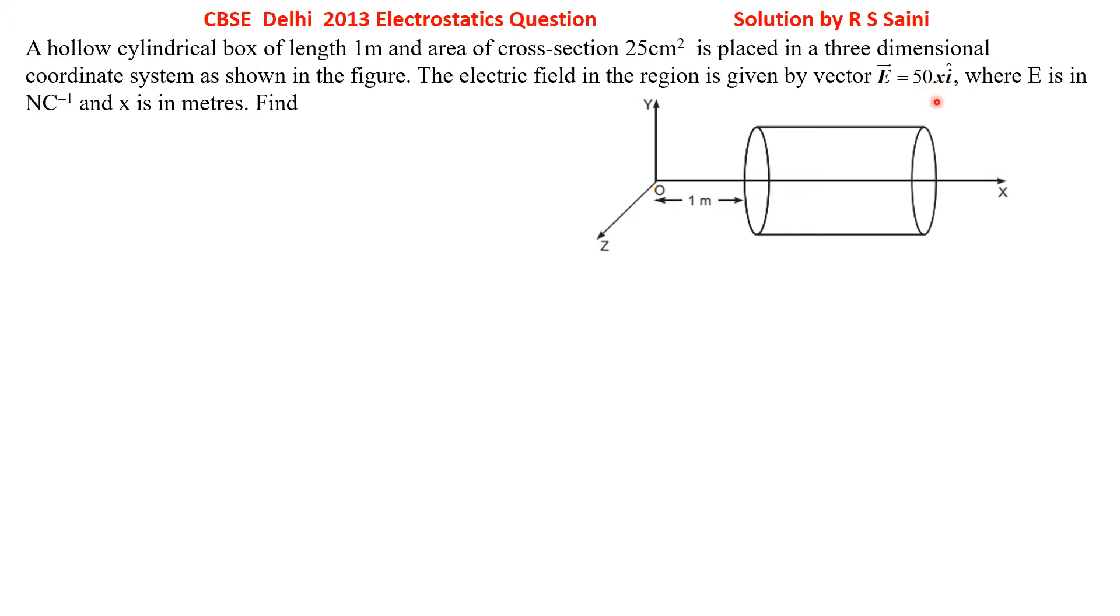Where E is in Newton per coulomb, already in SI units, but area is not in SI units, we have to change it. First most job in solving a numerical is to change the units. Where x is in meter. Find number 1: net flux through the cylinder. Number 2: charge enclosed by the cylinder. Let's proceed.